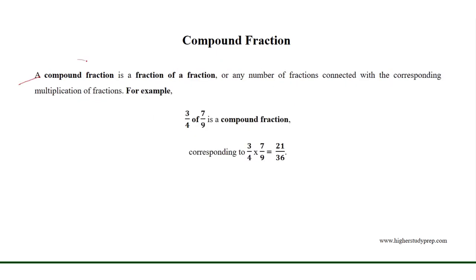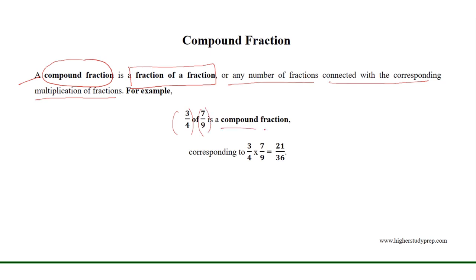A compound fraction is a fraction of a fraction, or any number of fractions connected with the corresponding multiplication of the fractions. For example, 3 over 4 of 7 over 9 is a compound fraction corresponding to the multiplication 3 over 4 times 7 over 9, which results in 21 over 36, where 3 times 7 equals 21 and 4 times 9 equals 36.